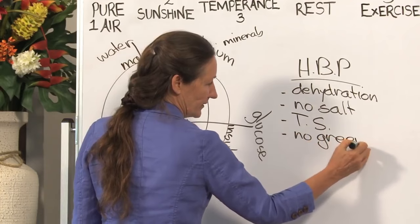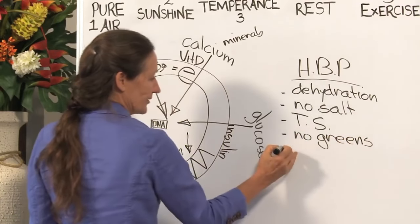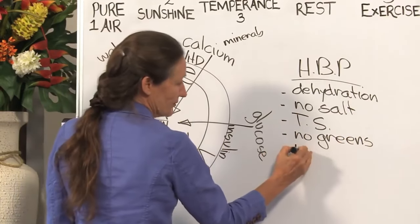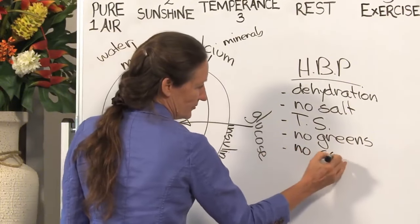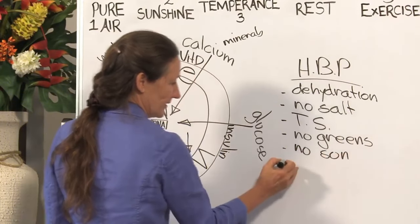No greens, no magnesium. Water can't get in. High blood pressure can be caused by no sun. No sun, no vitamin D. Minerals can't get in.